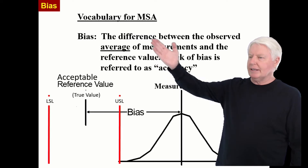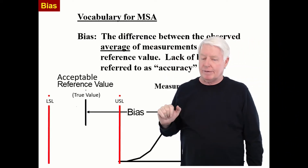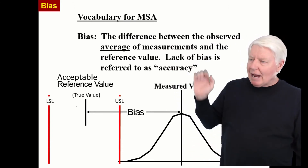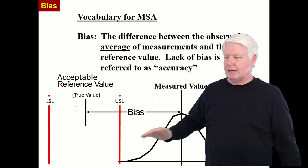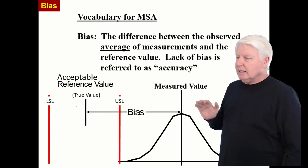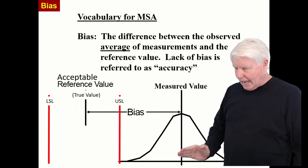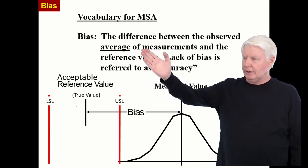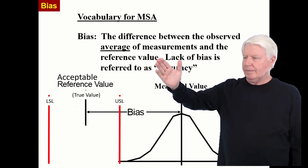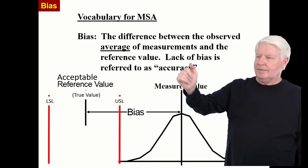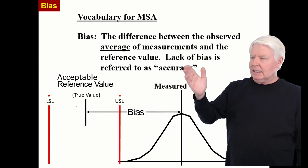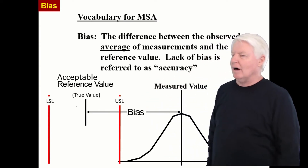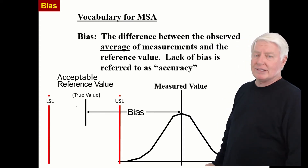Let me read the formal definition: the difference between the observed average of measurements — so I must measure the part multiple times, get the average, and refer to that average — and the reference value, the true value. That's all bias is: that distance. Lack of bias is referred to as accuracy. If we can reduce that bias, at some point we call it accurate. Low bias is high accuracy.